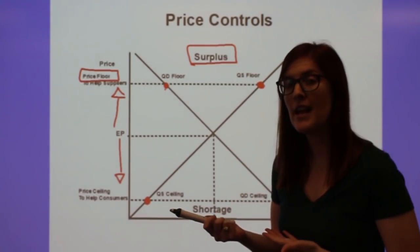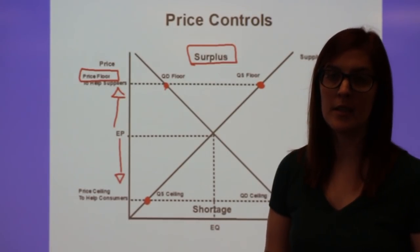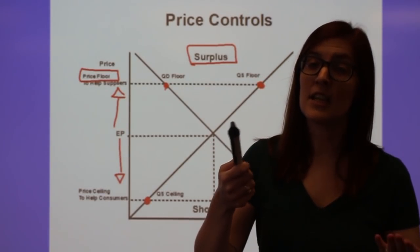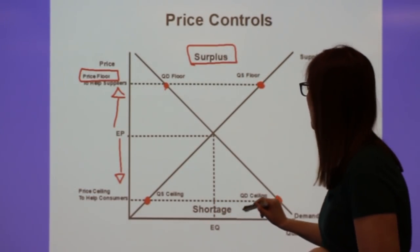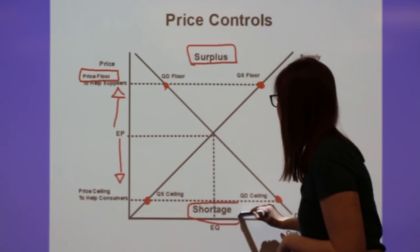So with that, if the price is low, now the producers don't want to sell as much quantity, but the consumers want to buy more. So because the quantity demanded is now larger than the quantity supplied, a price ceiling will always create a shortage.